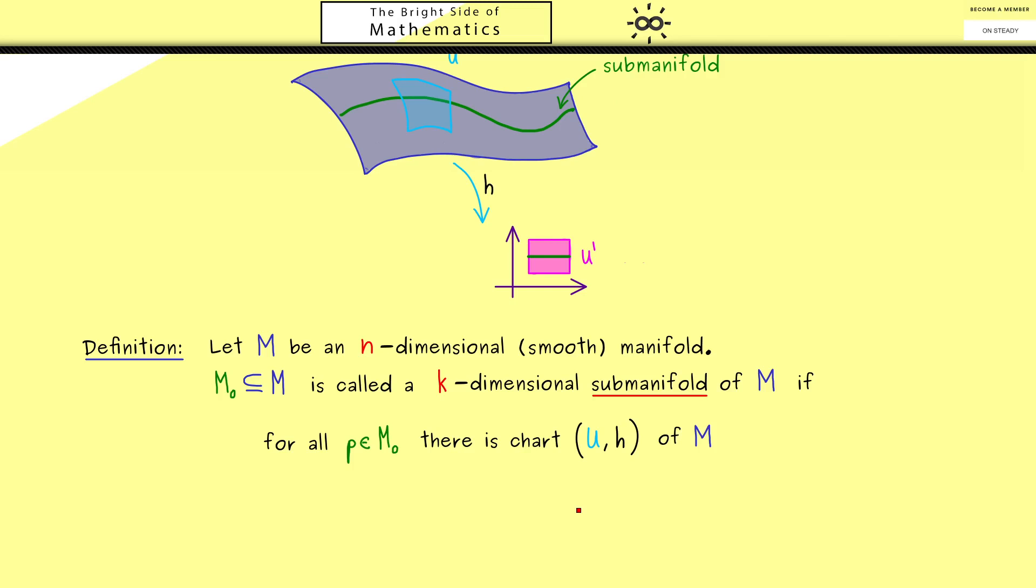Namely, a whole chart of the original manifold. So as usual, we call the chart (u,h), where u is the open set and h is the map. And now the property we want we have already discussed above. We want something about the image of the subset, and this is what we denote by h with brackets, and inside we have M_0 intersected with u.